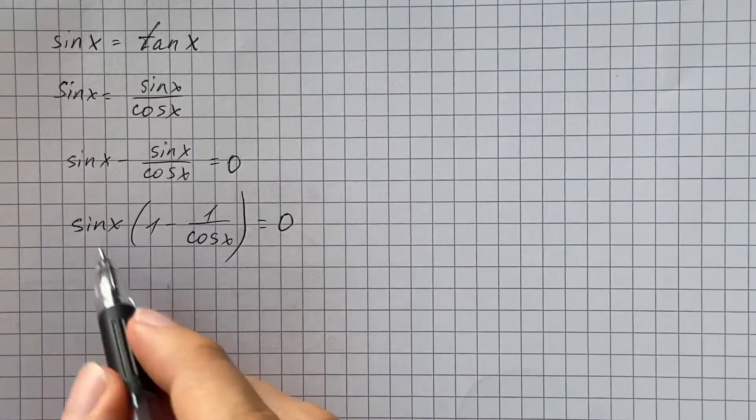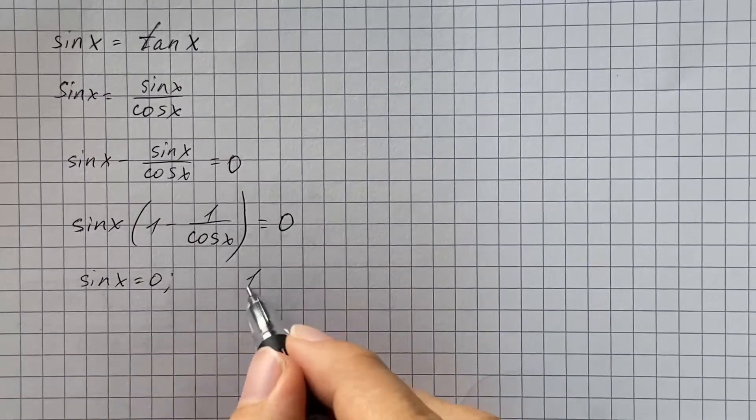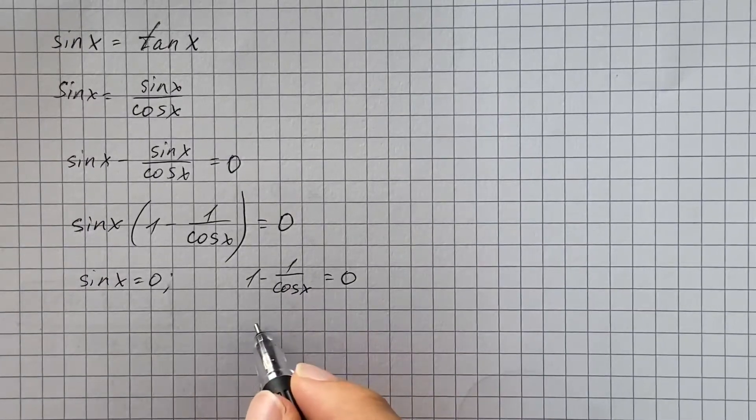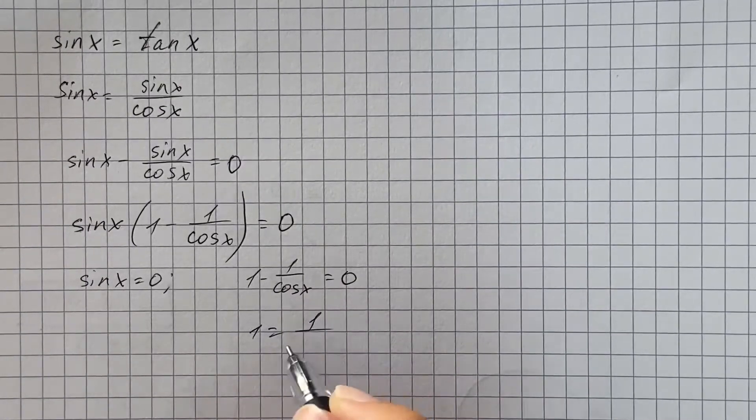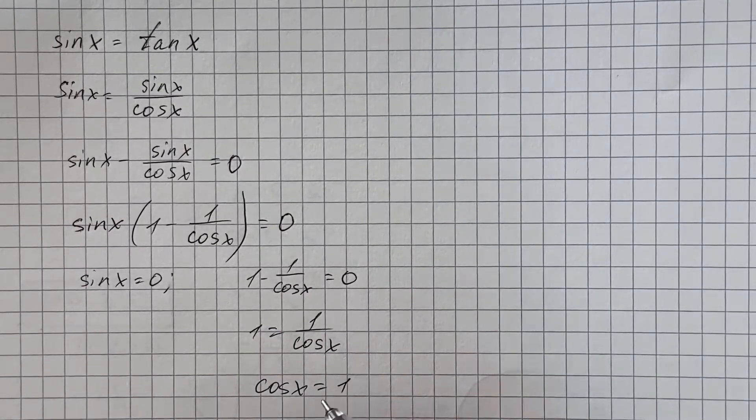So we set the first factor equal to 0 and the second factor equal to 0. From here we get that 1 equals 1 over cosine of x, or just cosine of x equals 1.